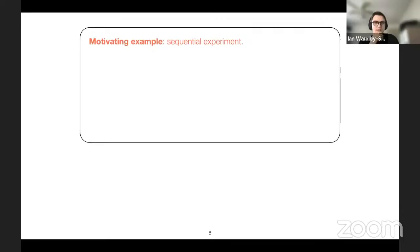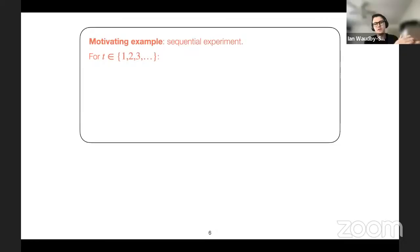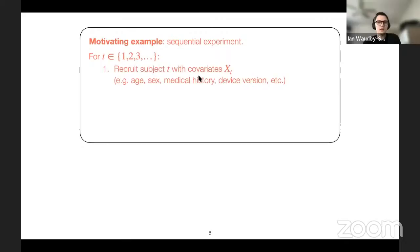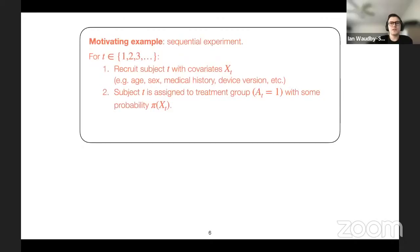For a motivating example, consider sequential experiments. For each time step t — meaning every time a new data point is observed, with no required hourly, monthly, or daily temporal association — we recruit a subject with covariates x_t. These could be demographics like age or sex, or in a clinical setting, medical history, or in an A/B testing environment, device or browser version.